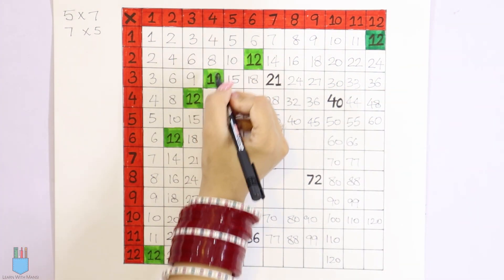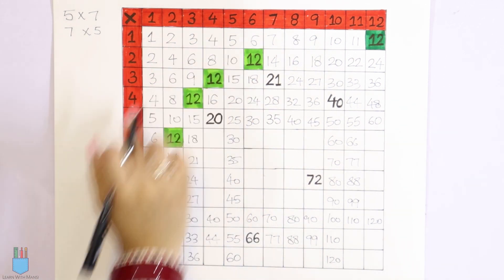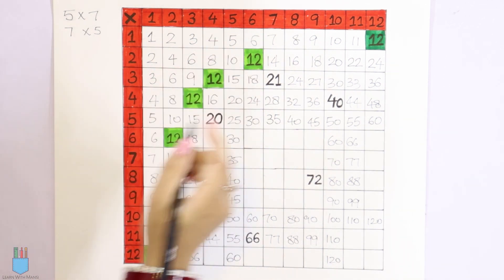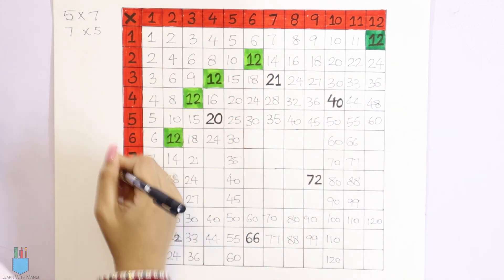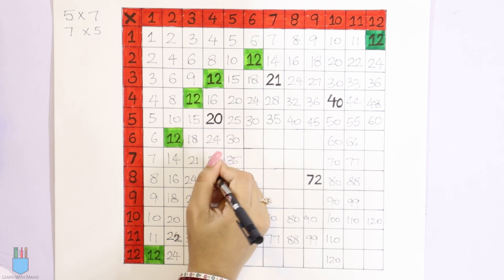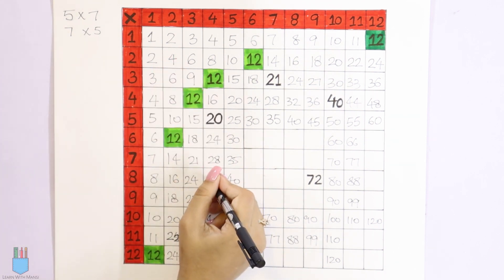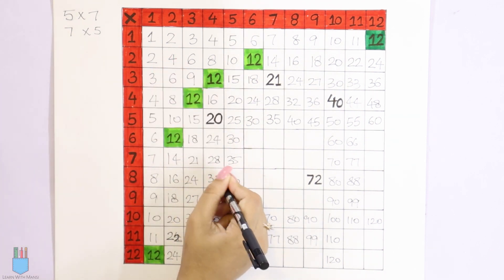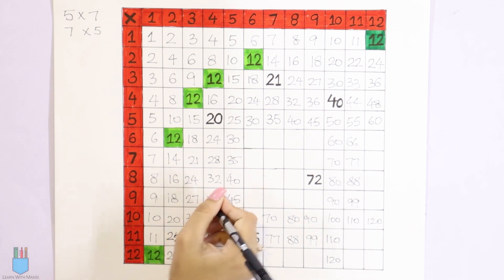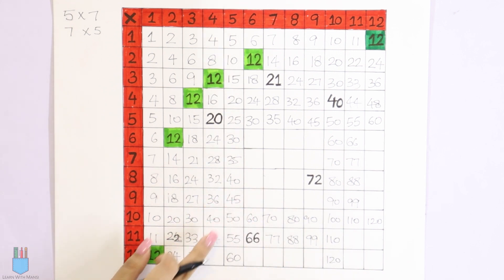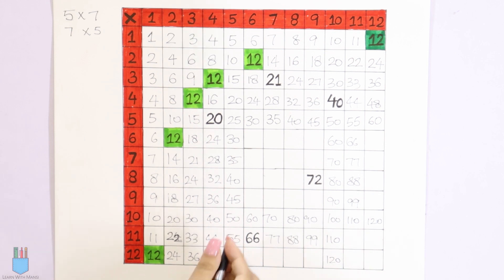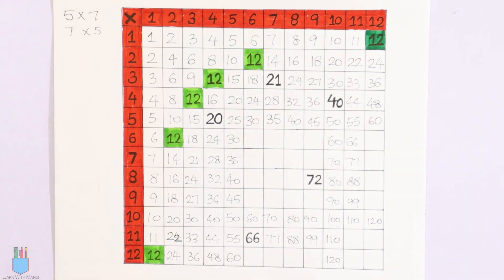The 4 times table: 4, 8, 12, 16, 20 — already filled. 4 into 6 is 24, 4 into 7 is 28, then 32, 4 into 9 is 36, then 40, and 12 into 4 is 48.